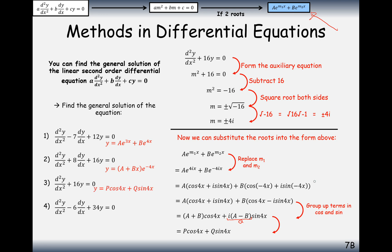The result is y equals p·cos(4x) plus q·sin(4x). You don't need to redo all that algebra every time — whenever you get purely imaginary roots ±ni from the auxiliary equation, you can jump straight to the answer form: p·cos(nx) plus q·sin(nx).